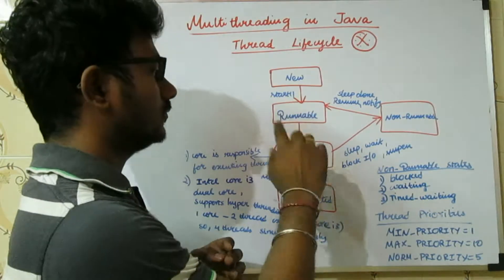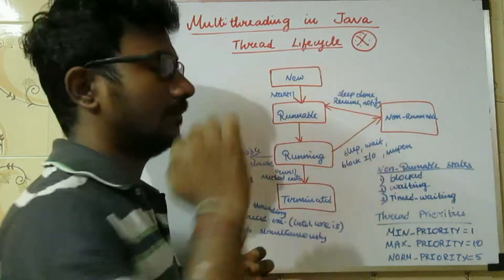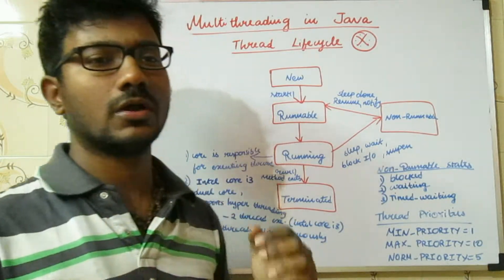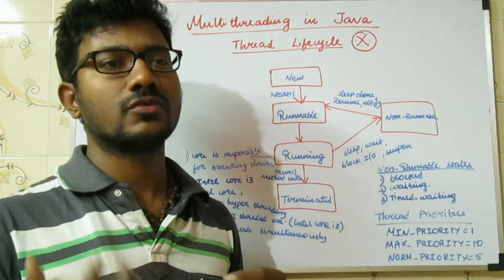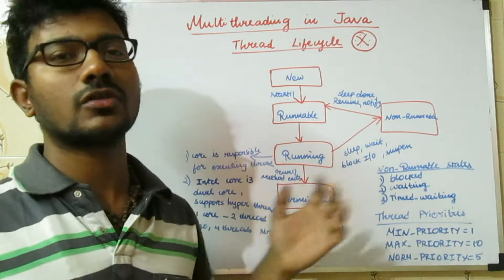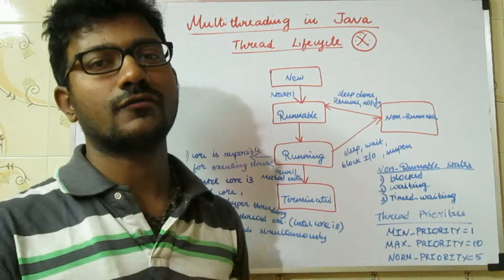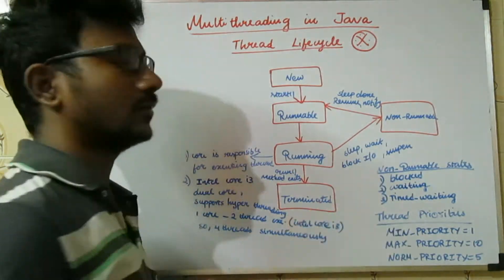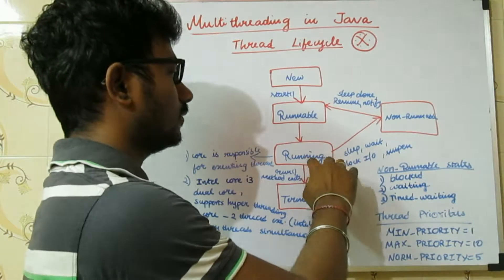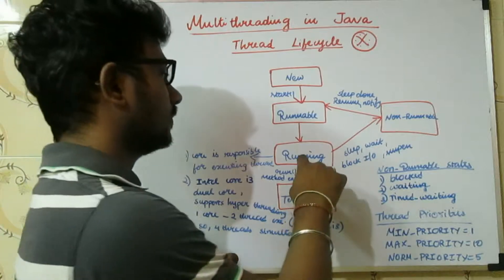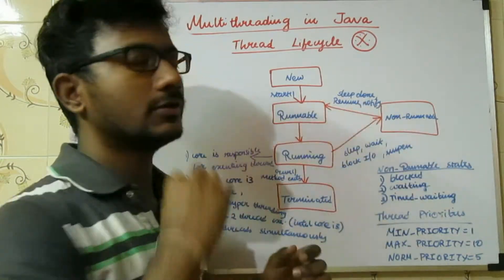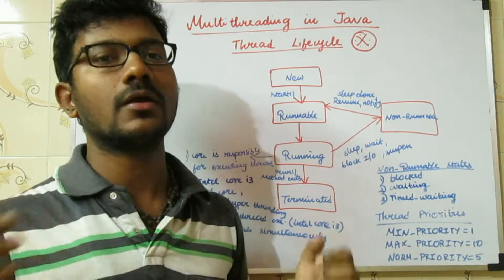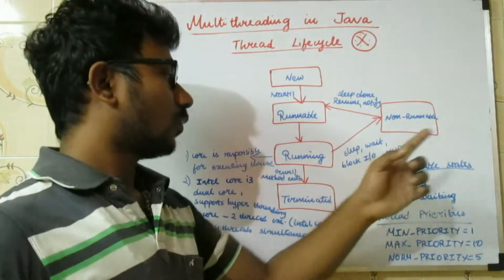Now we will see how the state changes from Running to Non-Runnable. If you are riding a bike and something blocks you, that is called the blocked stage. Then you move from Running to Non-Runnable state. Non-Runnable means you are eligible, but currently not eligible for execution.